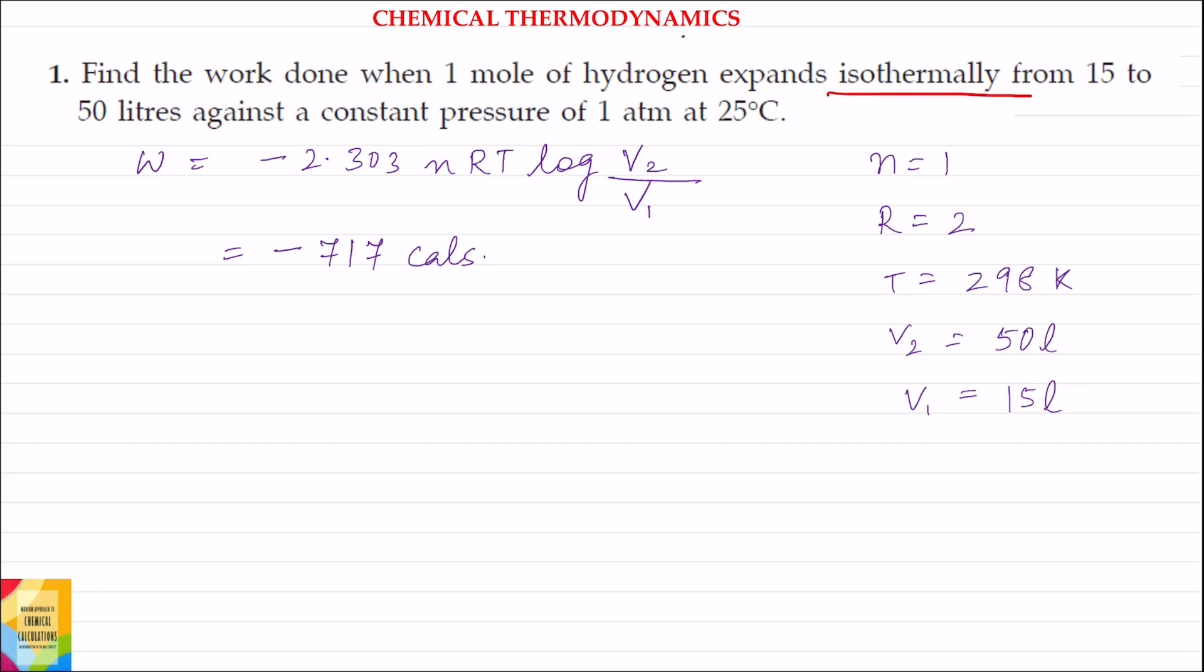Isothermal expansion means temperature is constant, or we can say change in temperature, delta T, is 0. Pressure is also constant at 1 atmosphere. Number of moles of gas is 1 mole.